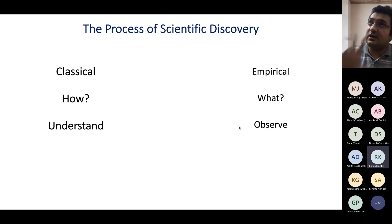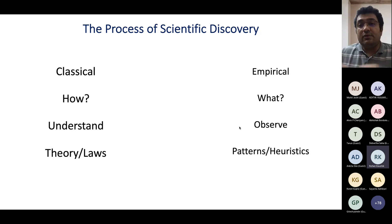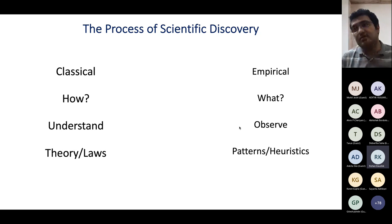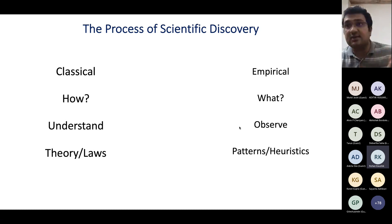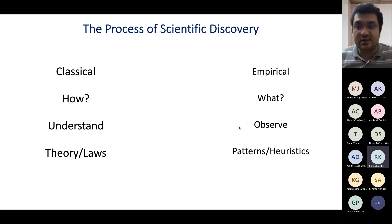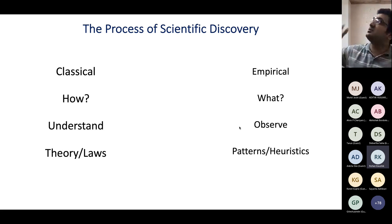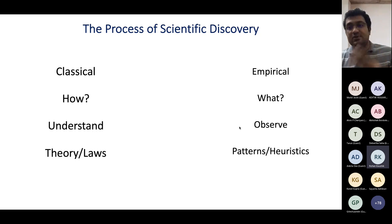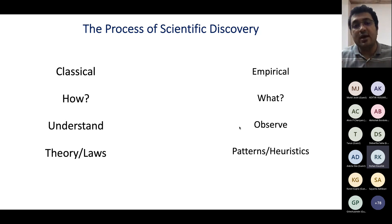In the empirical process, we collect data from real-life systems, observe, and find patterns or heuristics. For example, we observe that light comes when the sun goes up and disappears when it's gone. We notice a frequency — this object in the sky comes up very often and goes back very often. By observing again and again, we find a pattern. This is how science evolved millennia ago through the empirical process of observation.